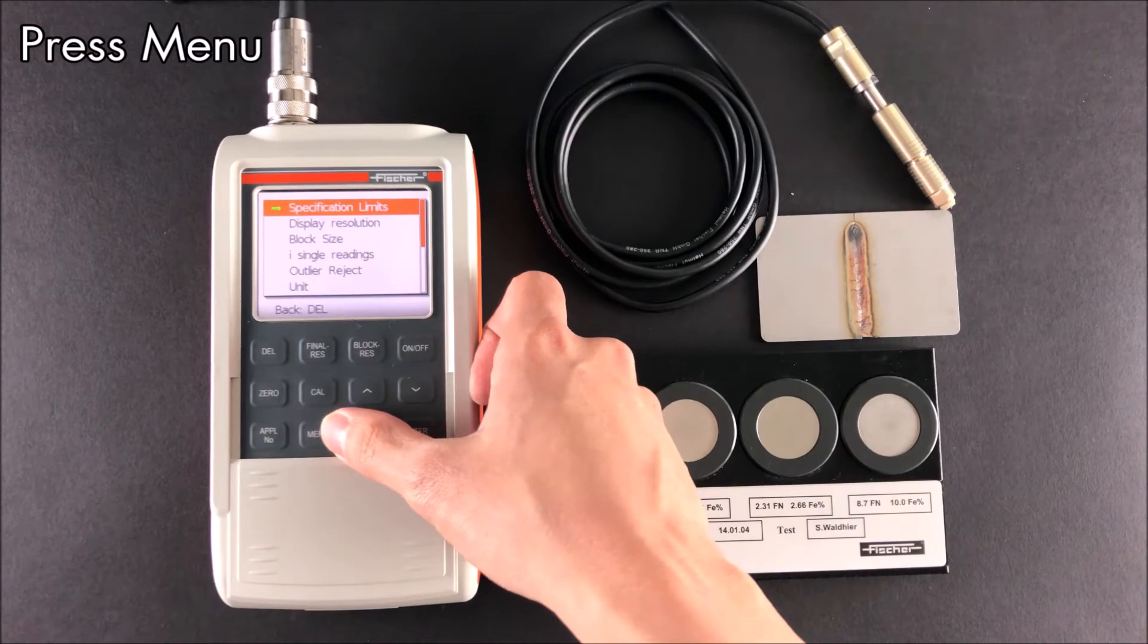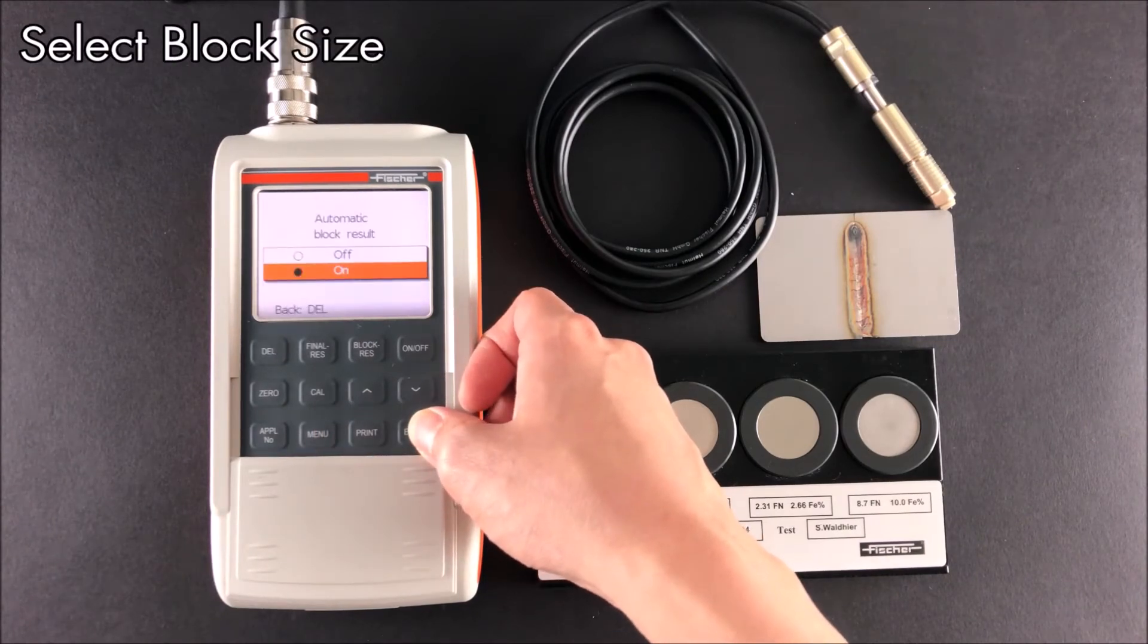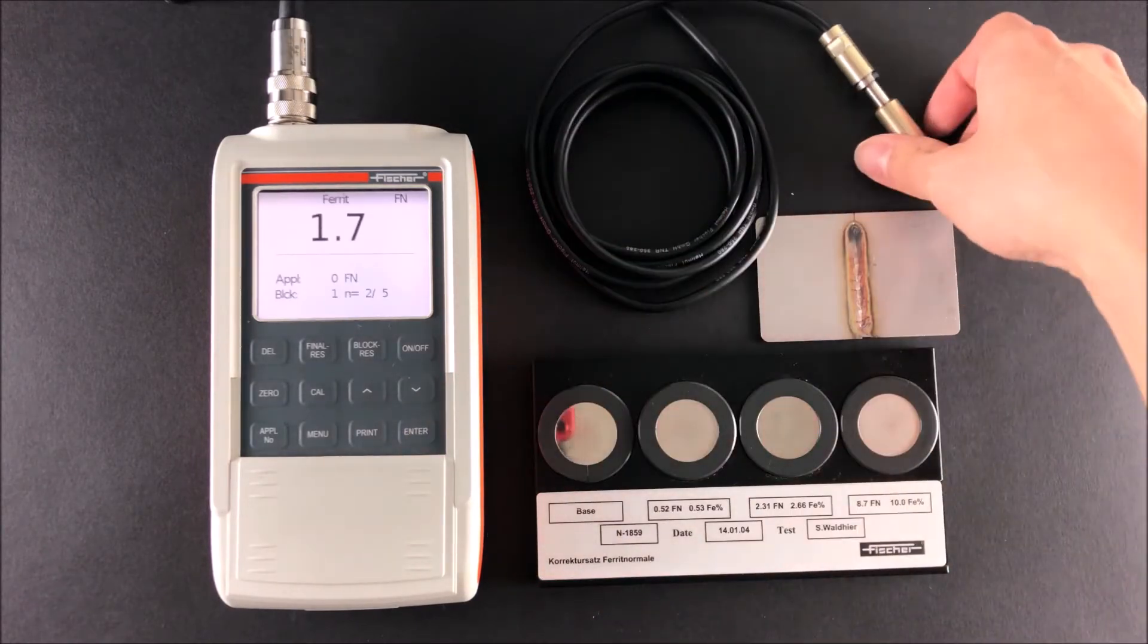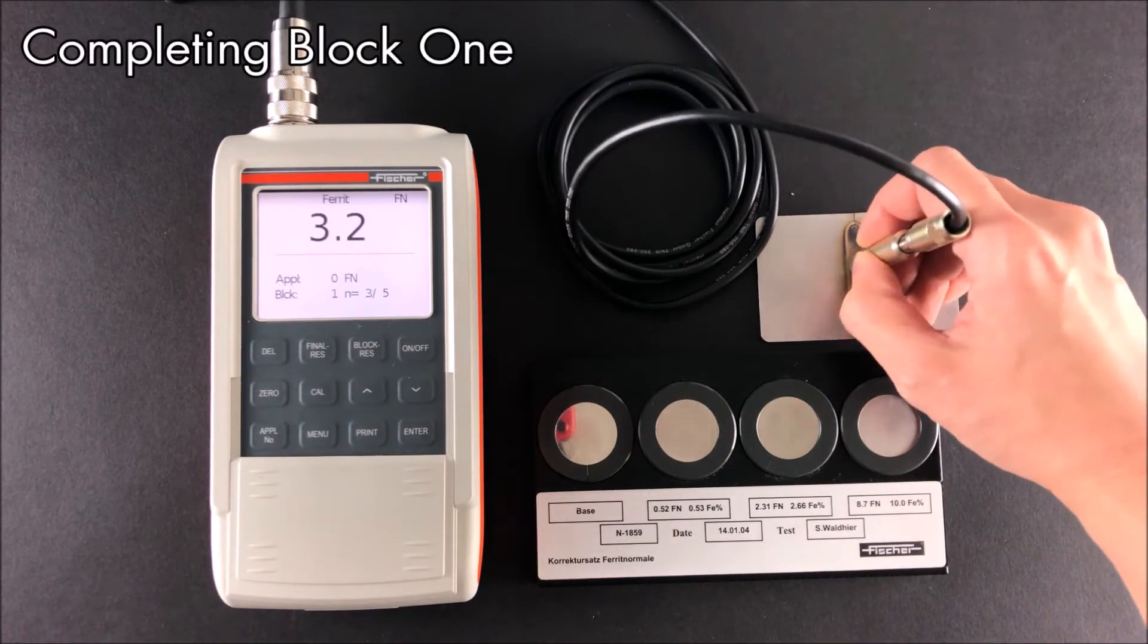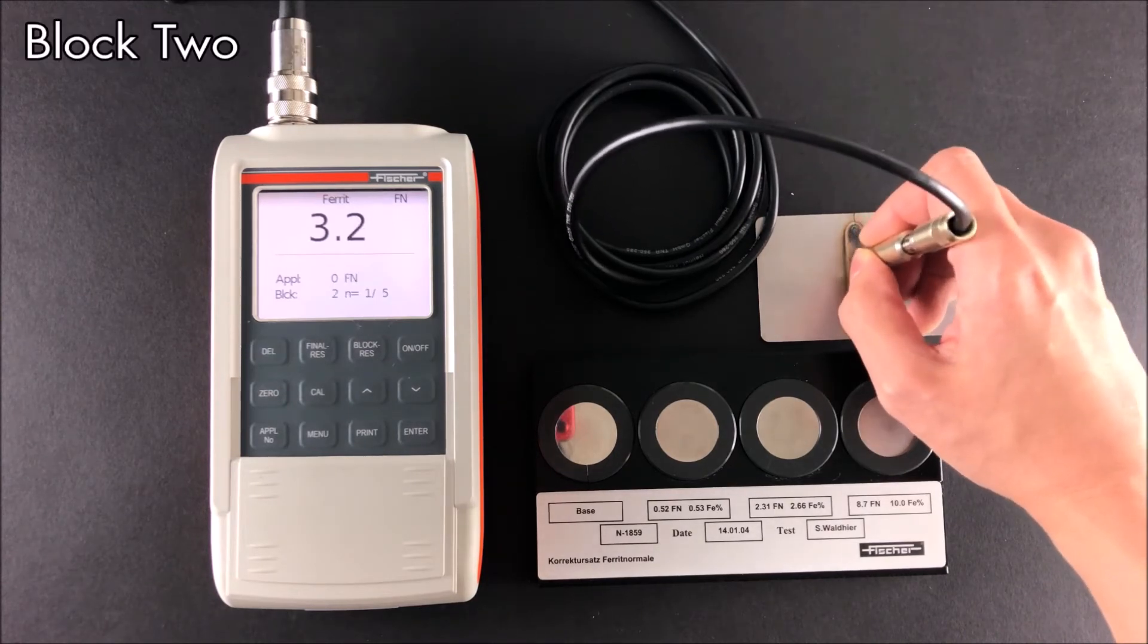Block size allows you to automatically block results according to a fixed block size. This is useful to differentiate measurement spots. To signify the closing of each block, two beeps will sound instead of the usual single beep.